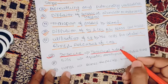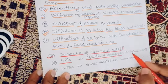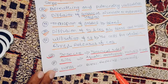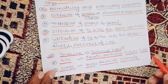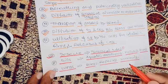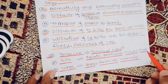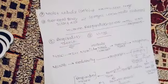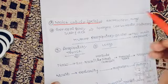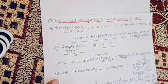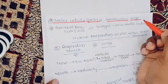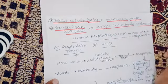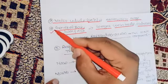Insects have tracheal tubes as their respiratory organ. Aquatic arthropods, mollusks, and fishes use gills for respiration. Mammals use lungs. Earthworm and frogs respire through moist cuticles or skin — this is called cutaneous respiration through the general body surface. Sponges, cnidarians, and flatworms also respire through their general body surface.